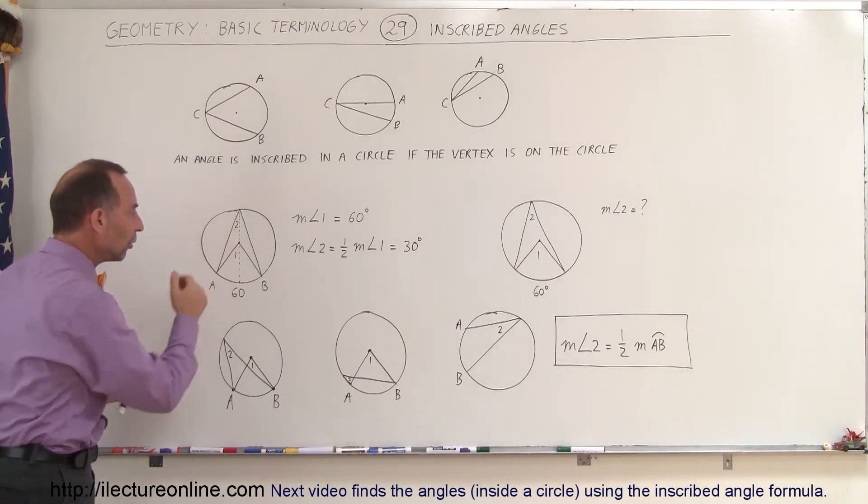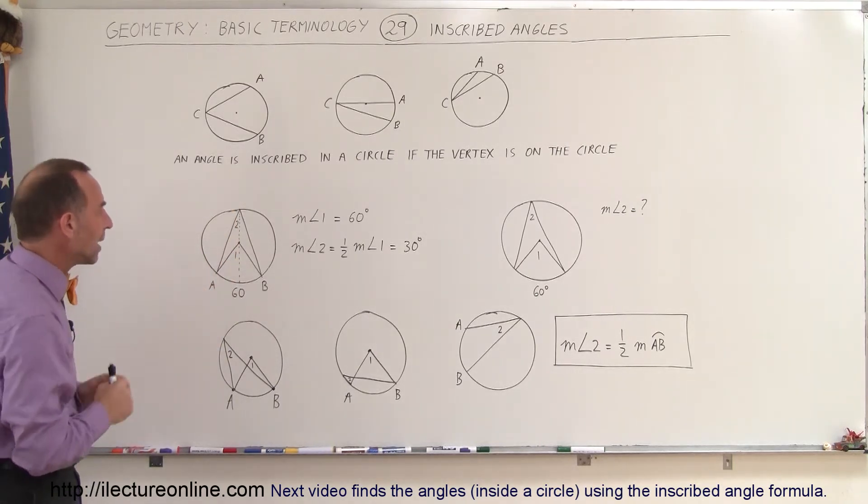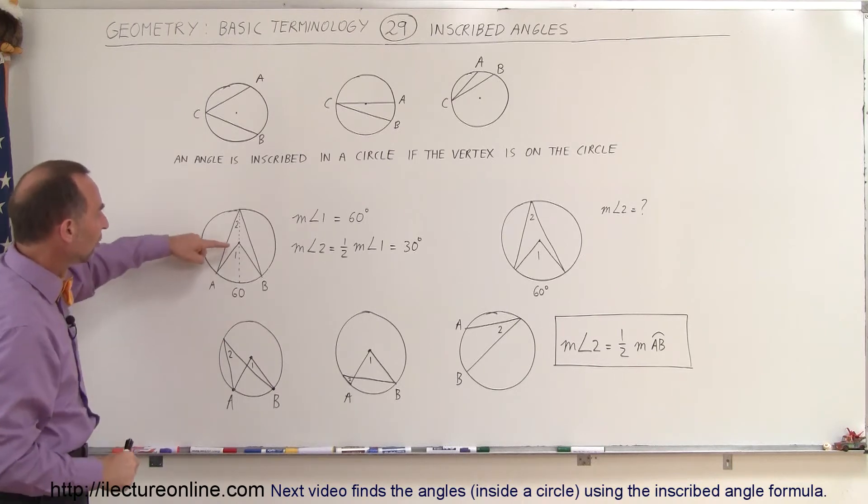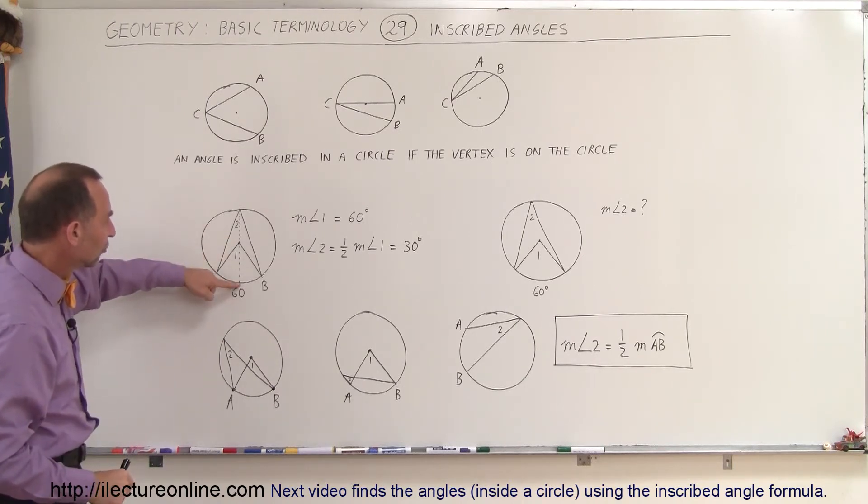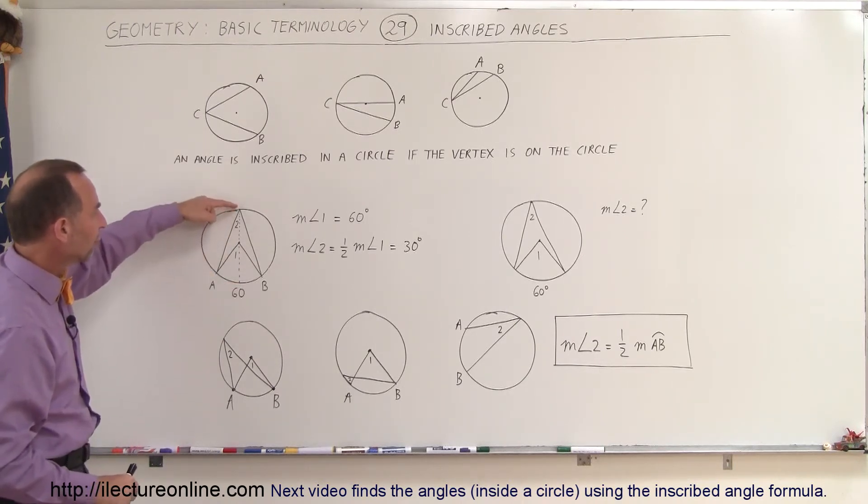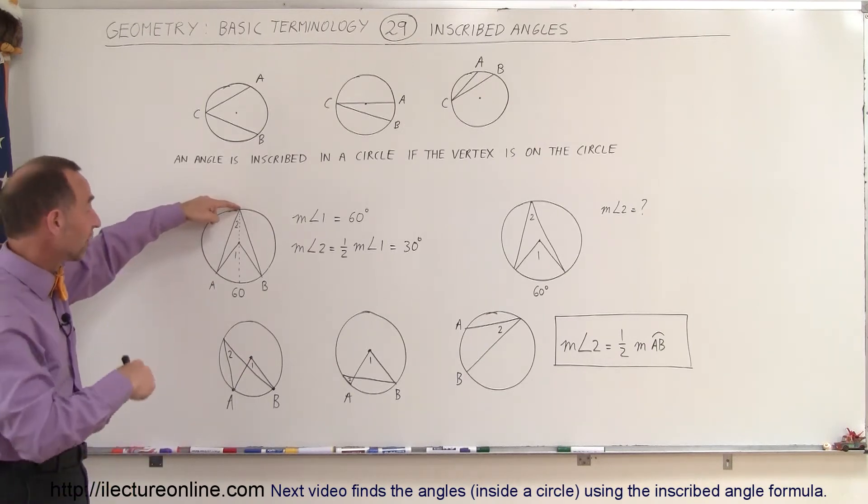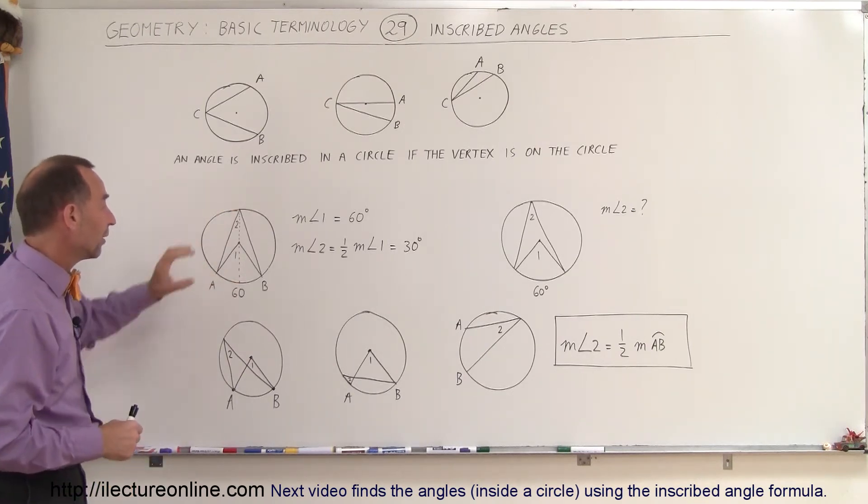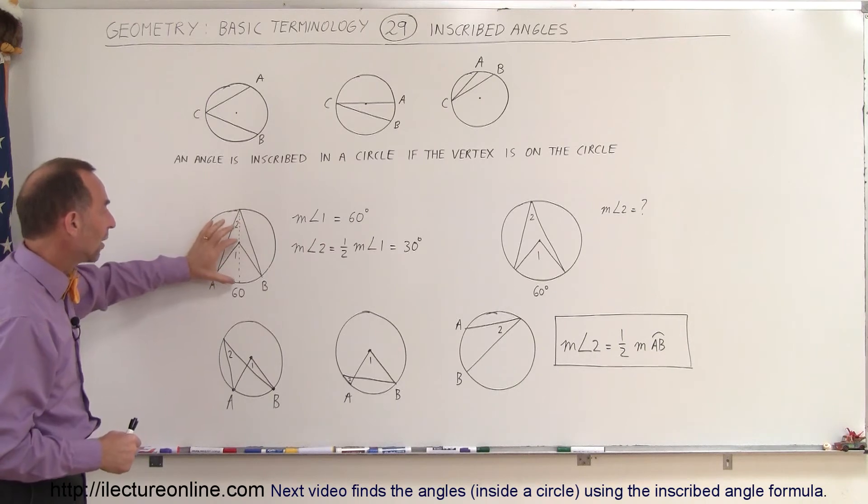Also, notice that the distance from the center to the edge of the circle here and the distance from the vertex here, which is on the other side of the circle, to the edge of the circle there, this distance is exactly twice this distance.